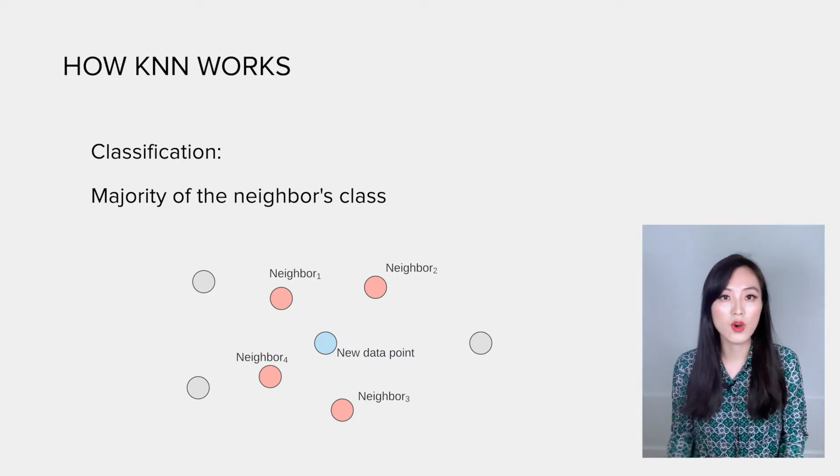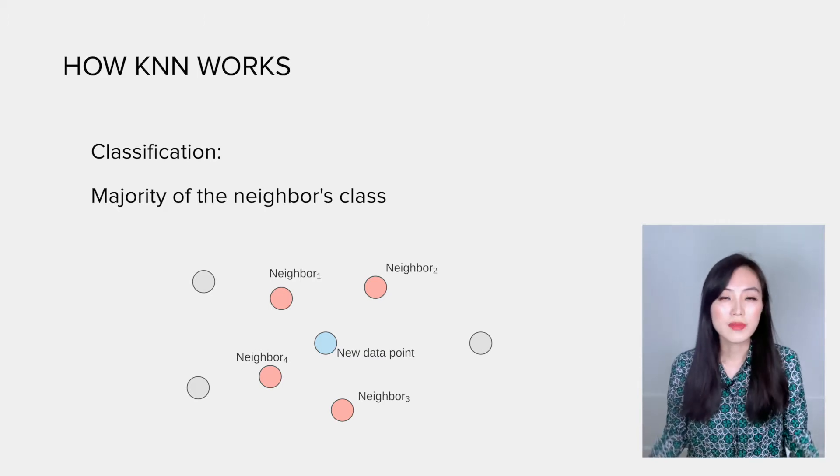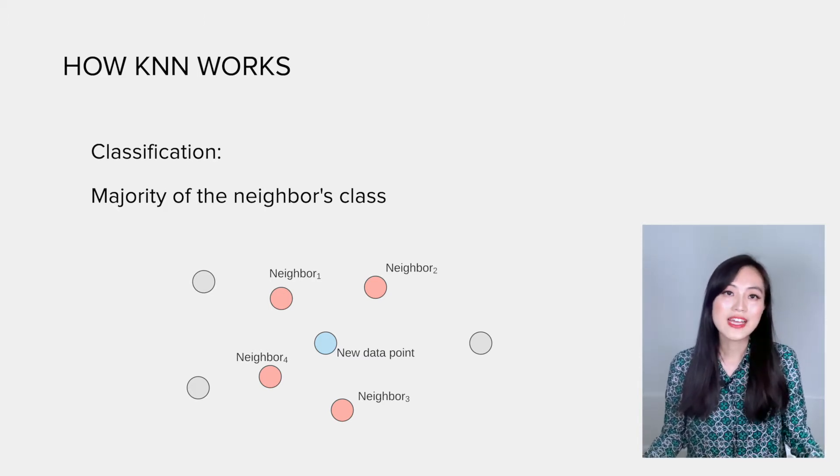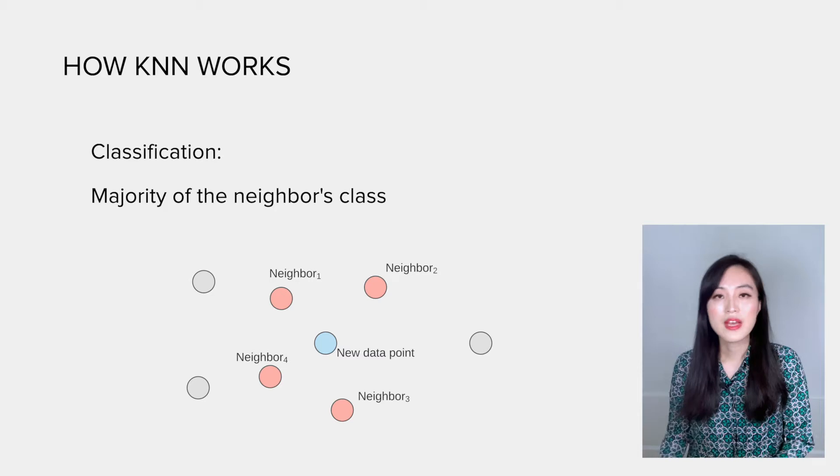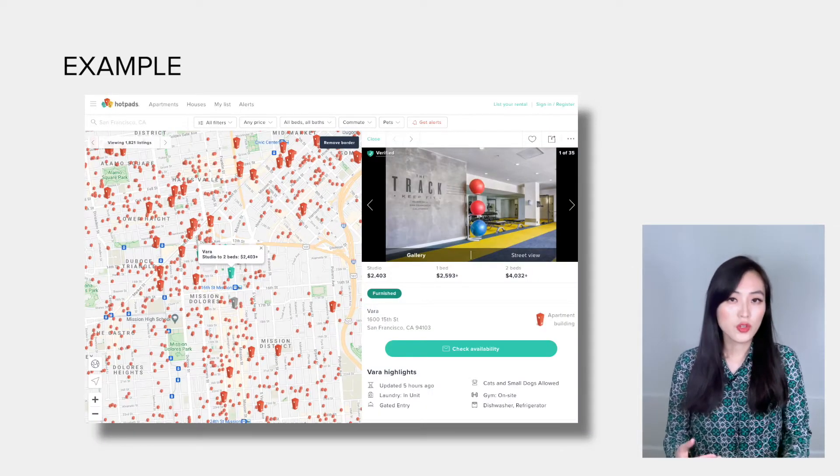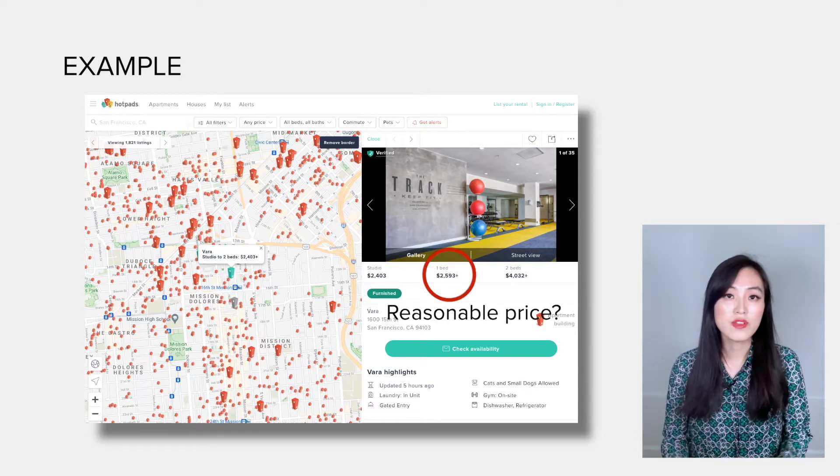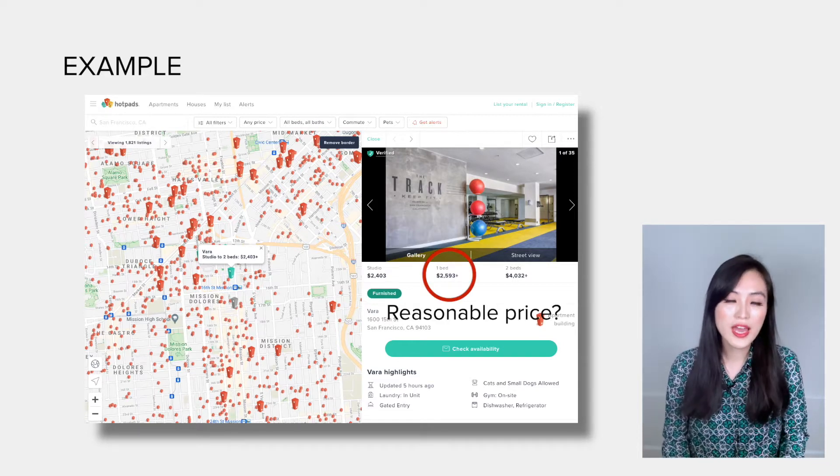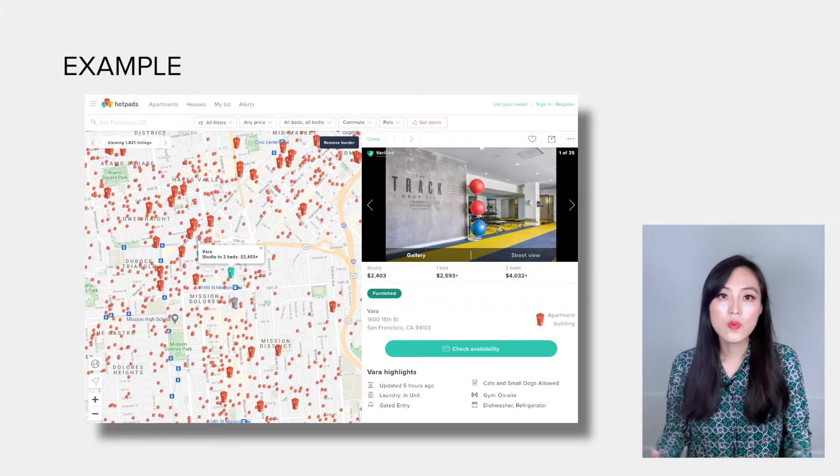Because of its simplicity and powerfulness, KNN is so commonly used. Sometimes you may not realize you are using it. For example, if you are looking for a new apartment and you want to know if the rent of an apartment you are interested in is reasonable or not, what do you do?